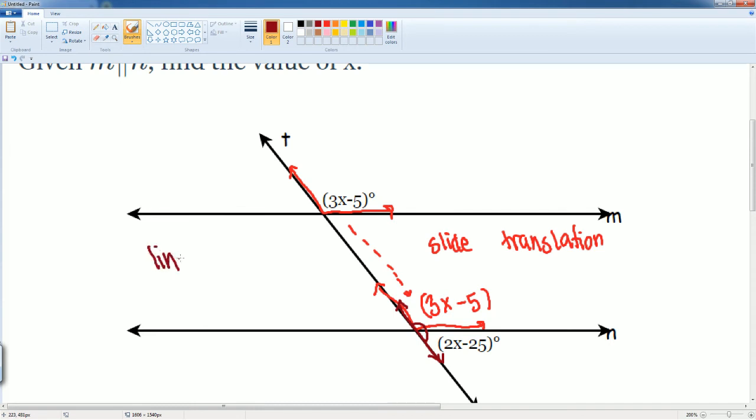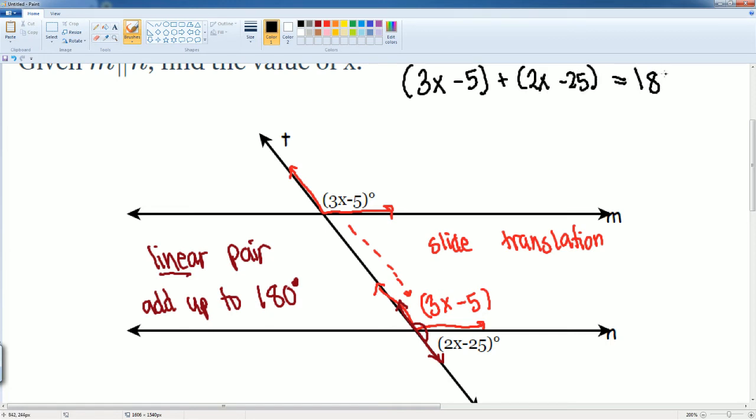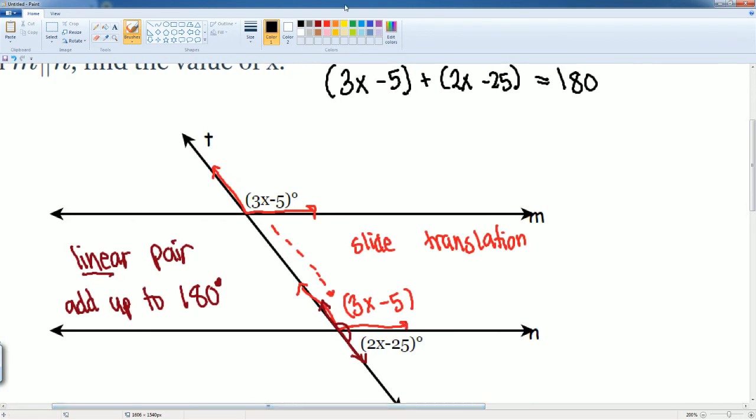So linear pair, they make a line. That means they add up to 180 degrees. So we're gonna set up our equation. 3x minus 5 plus 2x minus 25 is gonna be equal to 180 degrees. Why are we allowed to do that? Because we saw that they are linear pairs.